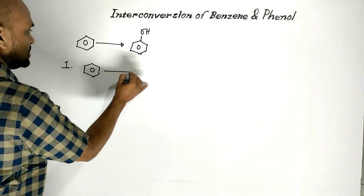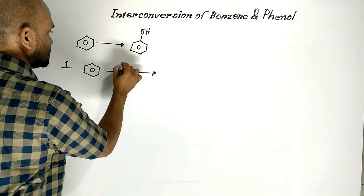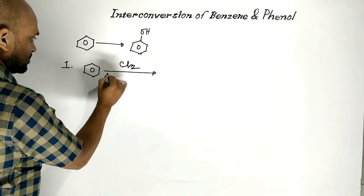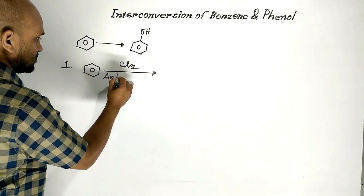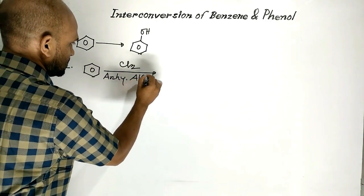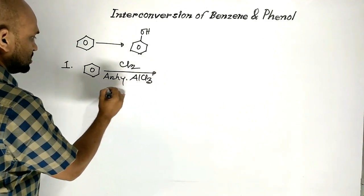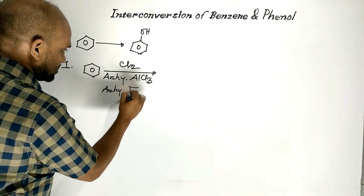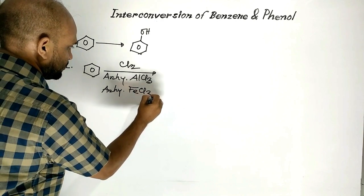Benzene is treated with chlorine in presence of anhydrous aluminum chloride or anhydrous ferric chloride.